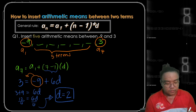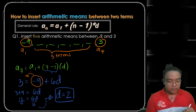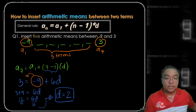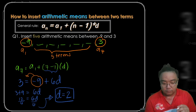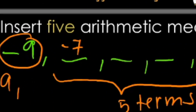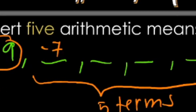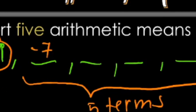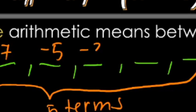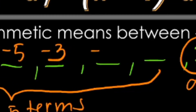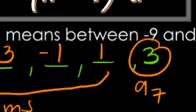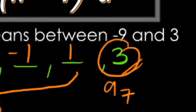If the common difference is 2, we can now insert the terms in between. From negative 9, add 2 to get negative 7, add 2 again to get negative 5, then negative 3, then negative 1, then 1, and plus 2 gives us 3.